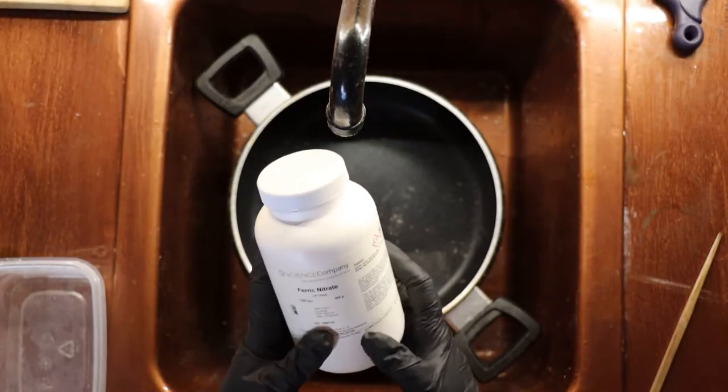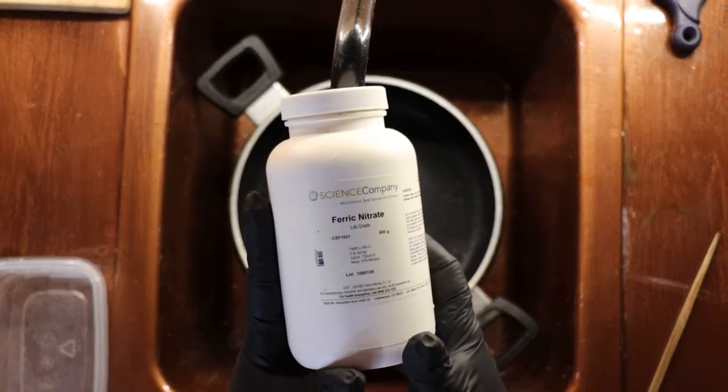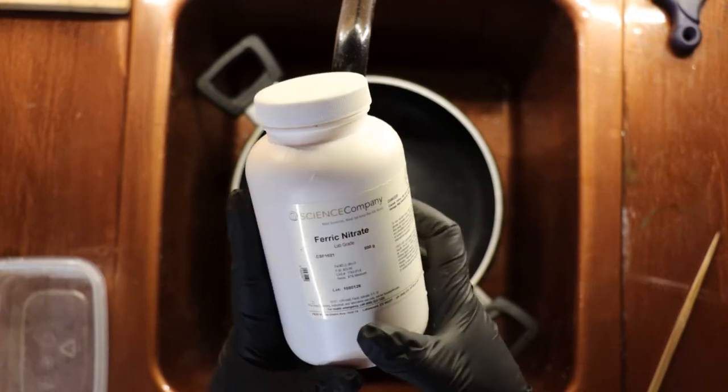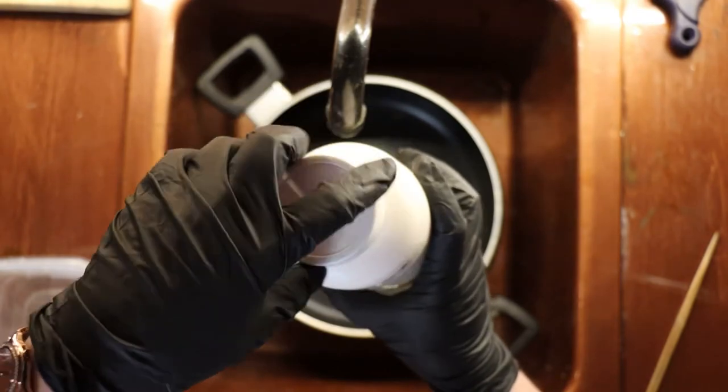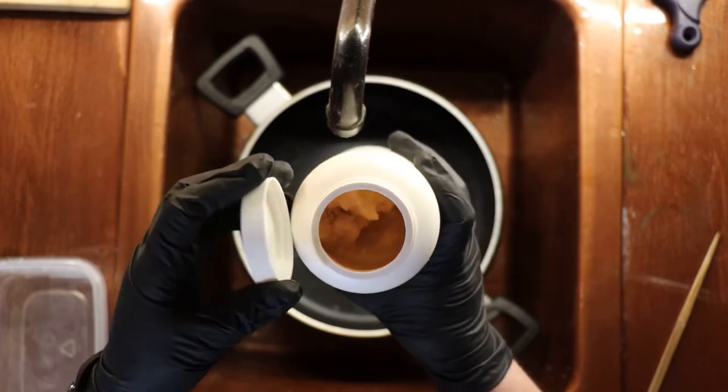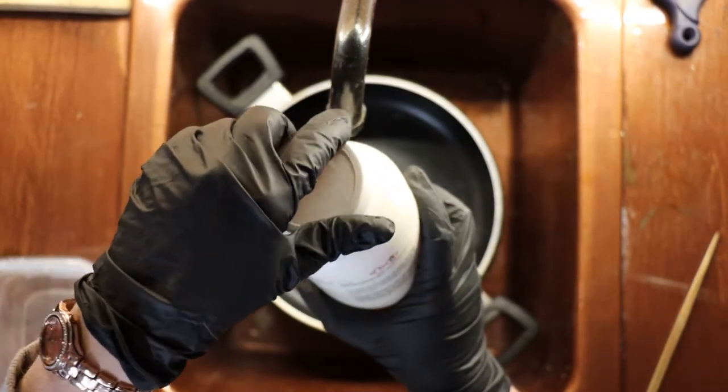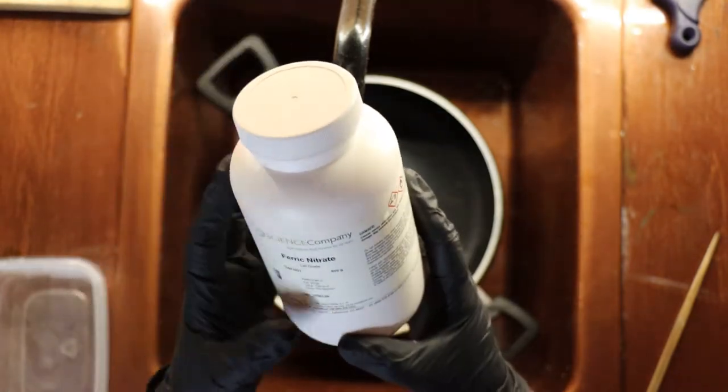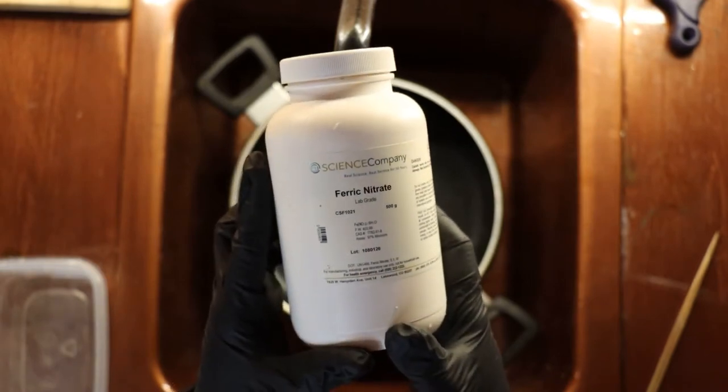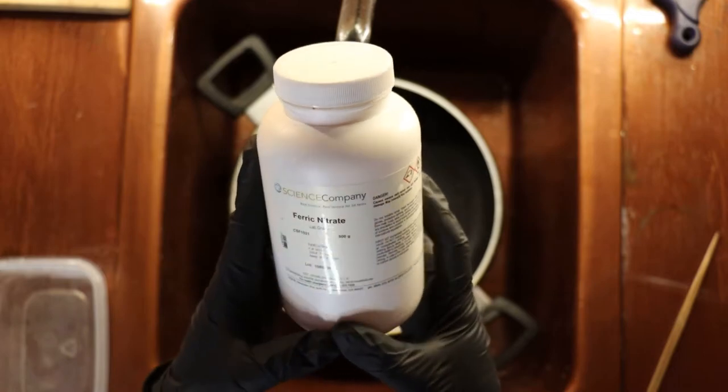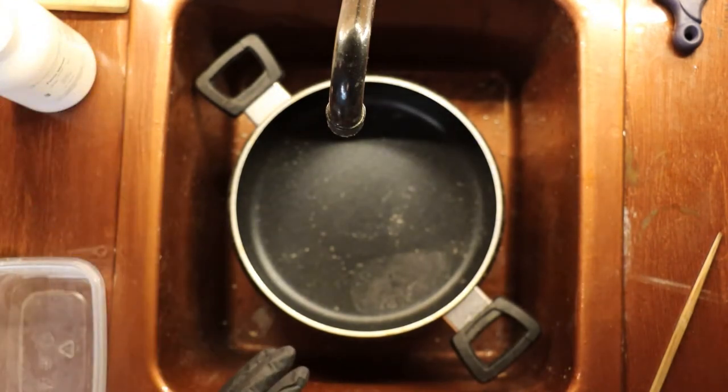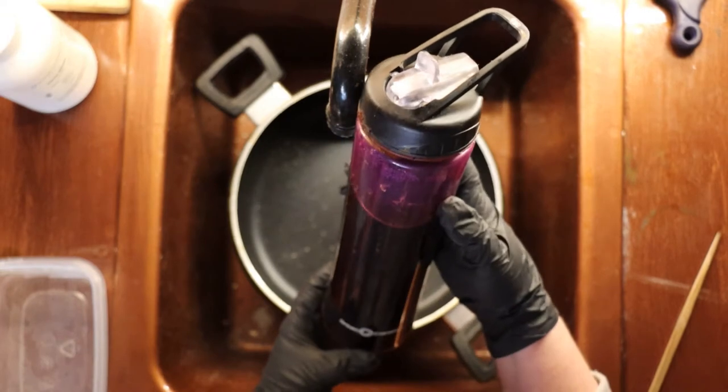You can etch sterling silver using a chemical called ferric nitrate. I get my ferric nitrate from a company called Science Company, and you can find it online. I get the 500 gram bottle. You can see that it is a kind of a purple crystal. You mix this with water to get your etching solution. There's also a way that you can electro etch, but for my process, I just use the ferric nitrate. Ferric nitrate will etch sterling silver, but not copper. For copper, you want to use ferric chloride.